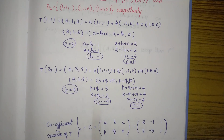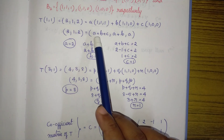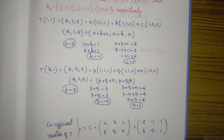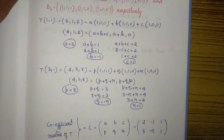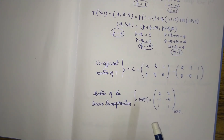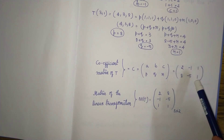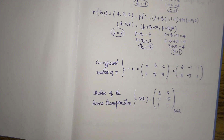Now write the coefficient matrix using the values of a, b, c and p, q, r. The coefficient matrix has [a, b, c] = [2, −1, 1] and [p, q, r] = [8, −5, 1]. The matrix of the linear transformation is the transpose of this coefficient matrix, giving a 3×2 matrix with first column (2, −1, 1) and second column (8, −5, 1).